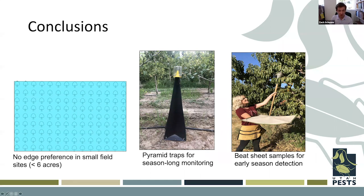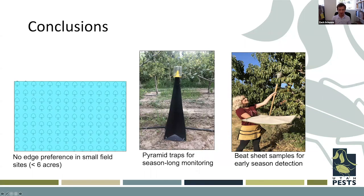For commercial producers, we recommend using the pyramid trap because it captures the most BMSB given our currently low populations. If populations increase, we could move toward sticky panel traps. For home gardens and early in the season, beat sheet sampling or hand detection is recommended, because in the early season all trap types were statistically equally effective. For home gardeners, hand sampling and checking all crops for stink bug nymphs, adults, and eggs throughout the season is the most cost-effective approach.